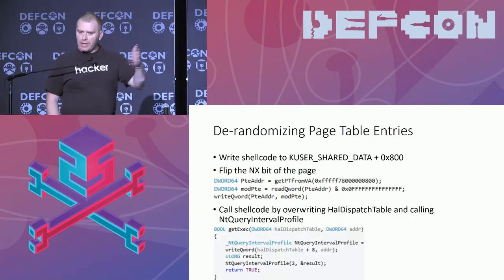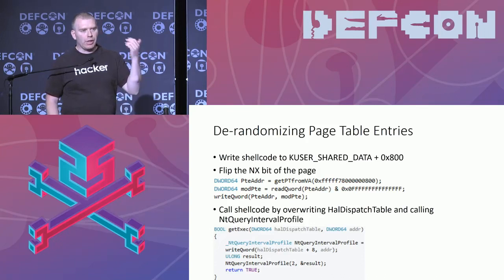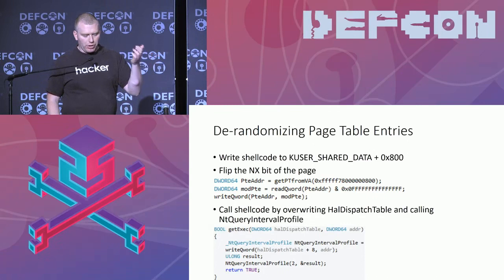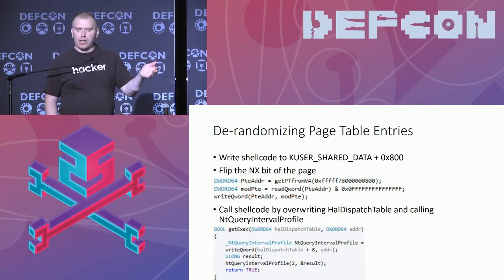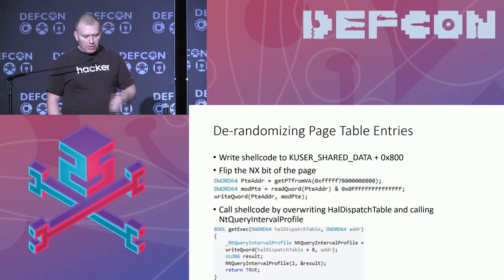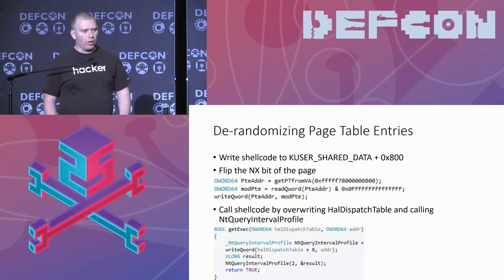And we're back to where we were before. We can allocate shellcode directly in kernel memory, flip the NX bit using page table entries and the write primitive, and then call the shellcode by overwriting the HAL dispatch table and invoking it. Similarly, we could also allocate it in user memory and flip the bits so it becomes a kernel page and execute it. Both will work. So this is just like what we did before.